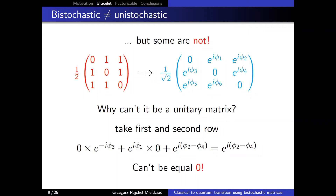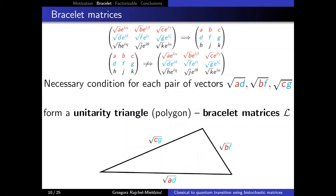So we have the unistochastic set as a strict inclusion inside the bistochastic matrices — it is not empty, and it does not contain all bistochastic matrices. Checking unistochasticity is not easy: given a bistochastic matrix, the amplitudes are determined, but the phases are not, so there are many phases to check. The problem becomes increasingly difficult in high dimensions.